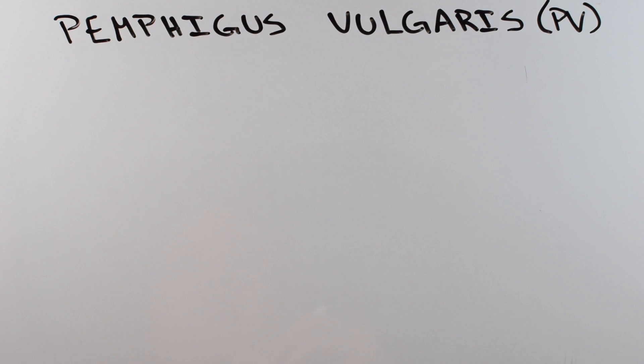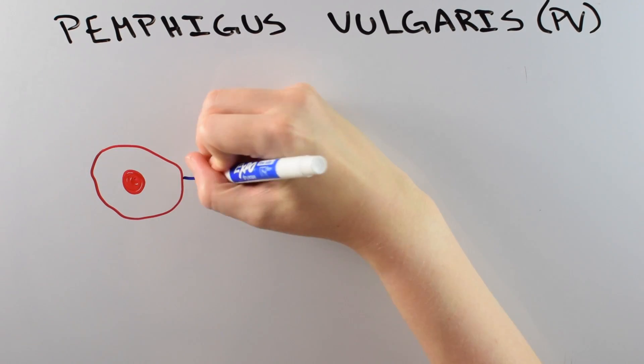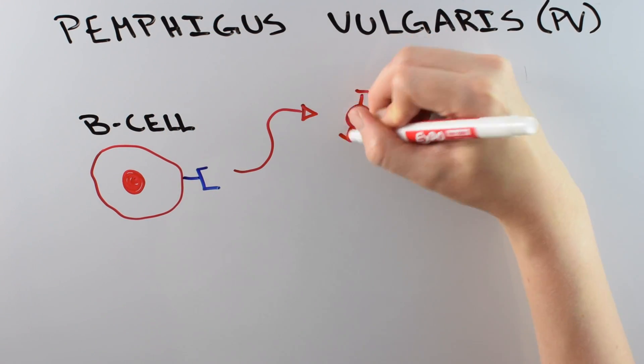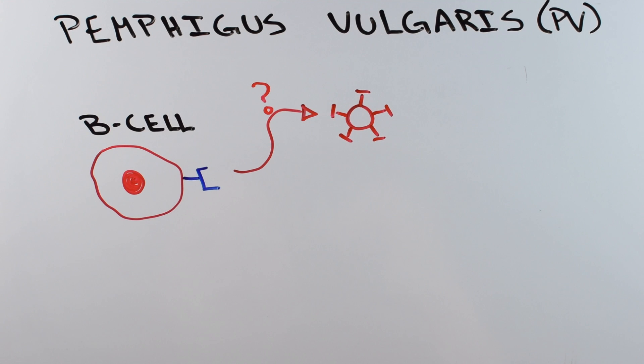To understand how more immune cells can solve the problem, we need to understand what's really going on in PV. PV starts with an immune cell called a B cell. B cells are usually responsible for recognizing outside invaders like viruses or bacteria.